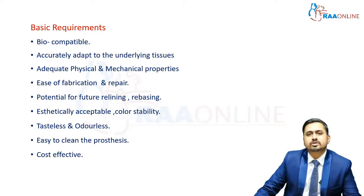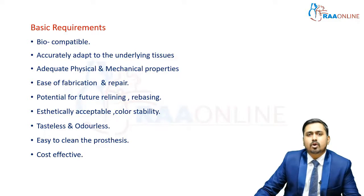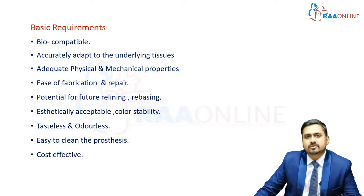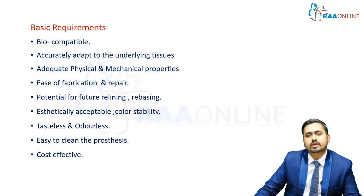Since the fabrication of your removable partial denture itself is a complex process with multiple components and designs involved, we do not want your denture base to add to that complexity. So an easy-to-fabricate material is always preferred over a complex material. Next comes your need for relining and your potential for future relining or rebasing. Since the underlying tissues on which your denture base rests tend to undergo anatomical changes over time — resorption can occur, soft tissue changes can occur — we might have to reline or rebase your removable partial denture base section over a period of time. In such scenarios, we always prefer a material which has adequate potential for relining and rebasing.